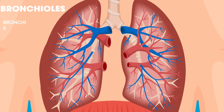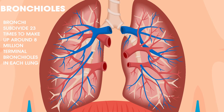In the lungs, bronchi subdivide 23 times to make up around 8 million terminal bronchioles in each lung. Bronchioles are smaller versions of bronchi, and as they subdivide they become smaller and smaller, with some measuring less than 1 mm in diameter. The bronchi and bronchioles resemble a tree, so the lungs are often referred to as the bronchial tree. The walls of the bronchi are made up of cartilage and smooth muscle, but as branches become increasingly smaller, the cartilage disappears and they consist predominantly of smooth muscle.